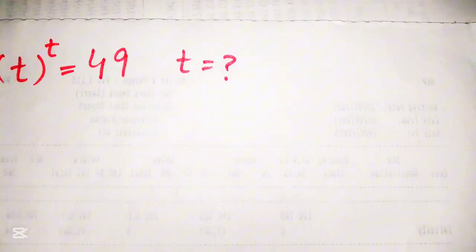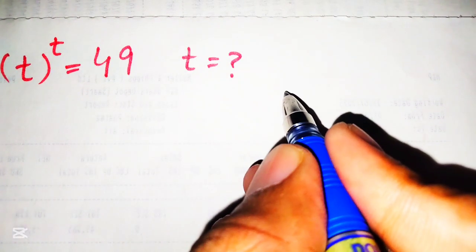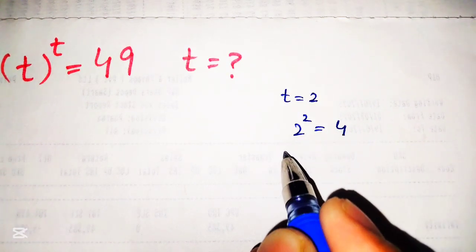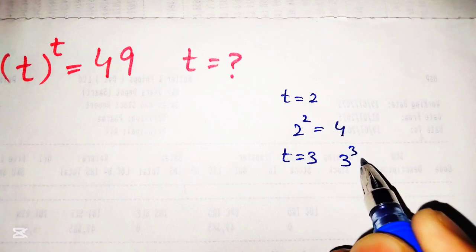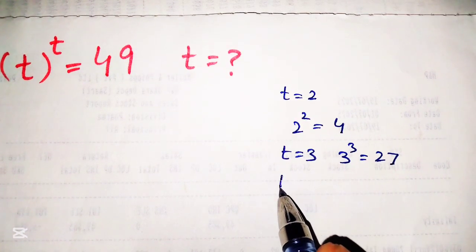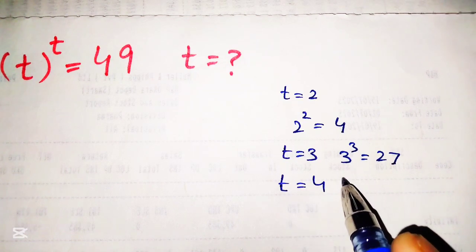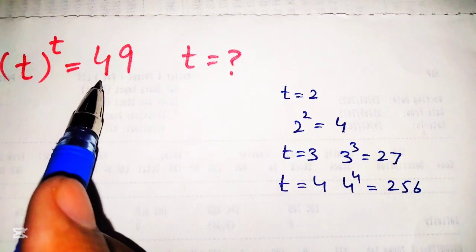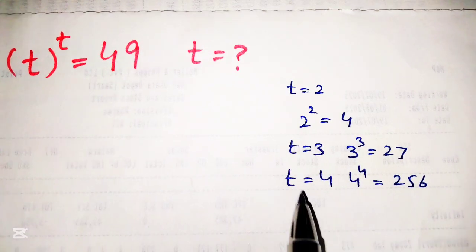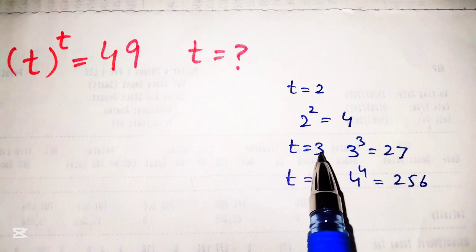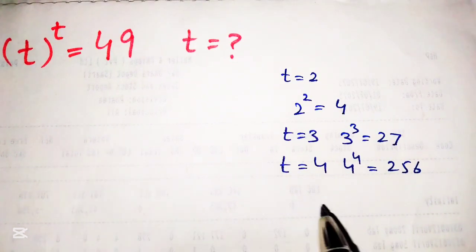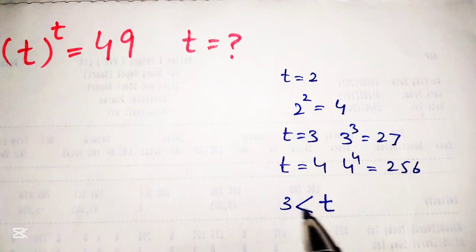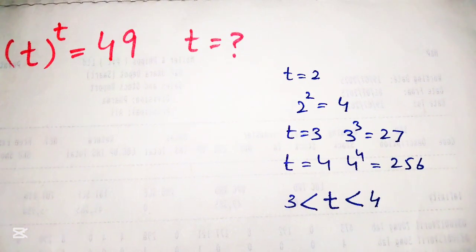By direct substitution, if we take t equal to 2 the equation becomes 2 raised to the power 2, which is 4. Taking t equal to 3 we get 3 raised to the power 3, which is 27. Taking t equal to 4 we get 4 raised to the power 4, which is 256 — far from 49. So the answer lies between 27 and 256, meaning t is between 3 and 4.